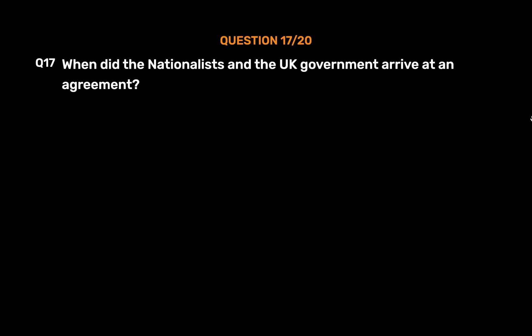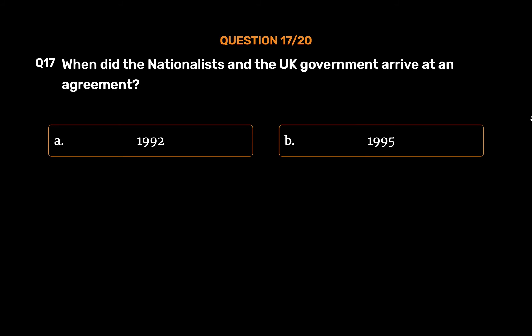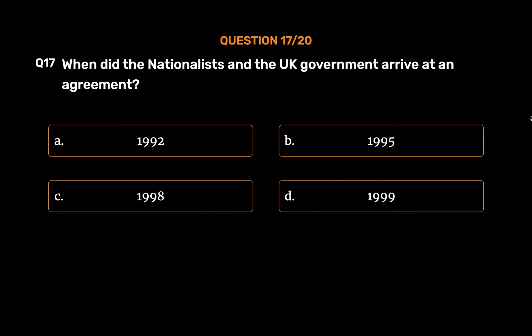Question number 17. When did the nationalists and the UK government arrive at an agreement? Option A: 1992. Option B: 1995. Option C: 1998.